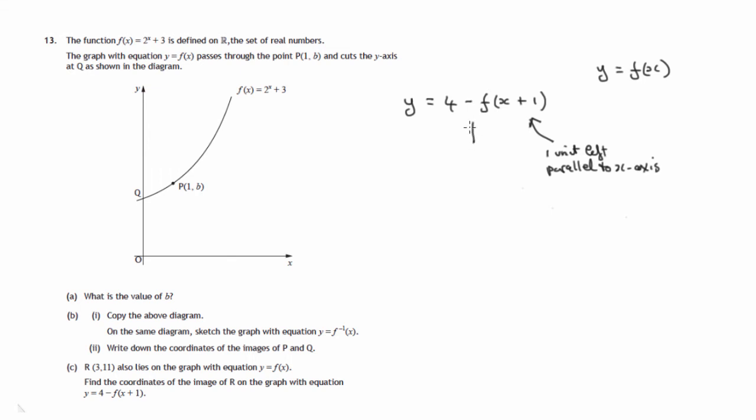This negative in front of f of x plus 1 means that we flip the graph, and adding 4 on to a graph means 4 units up parallel to the y-axis. So the whole graph is moved up parallel to the y-axis.